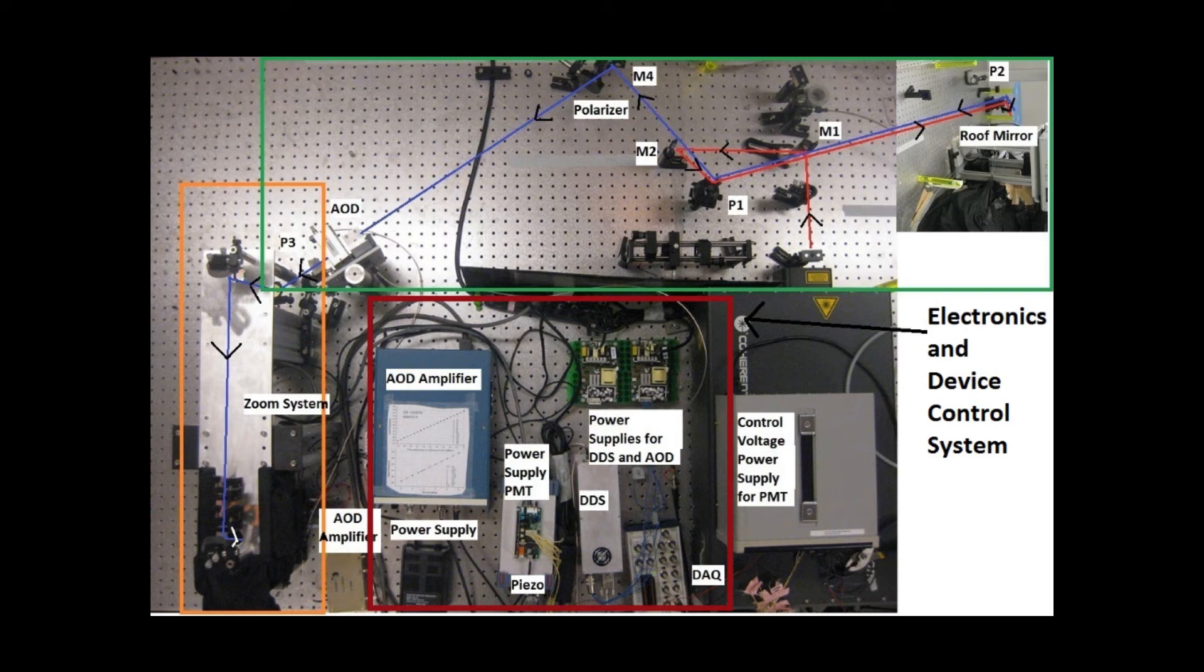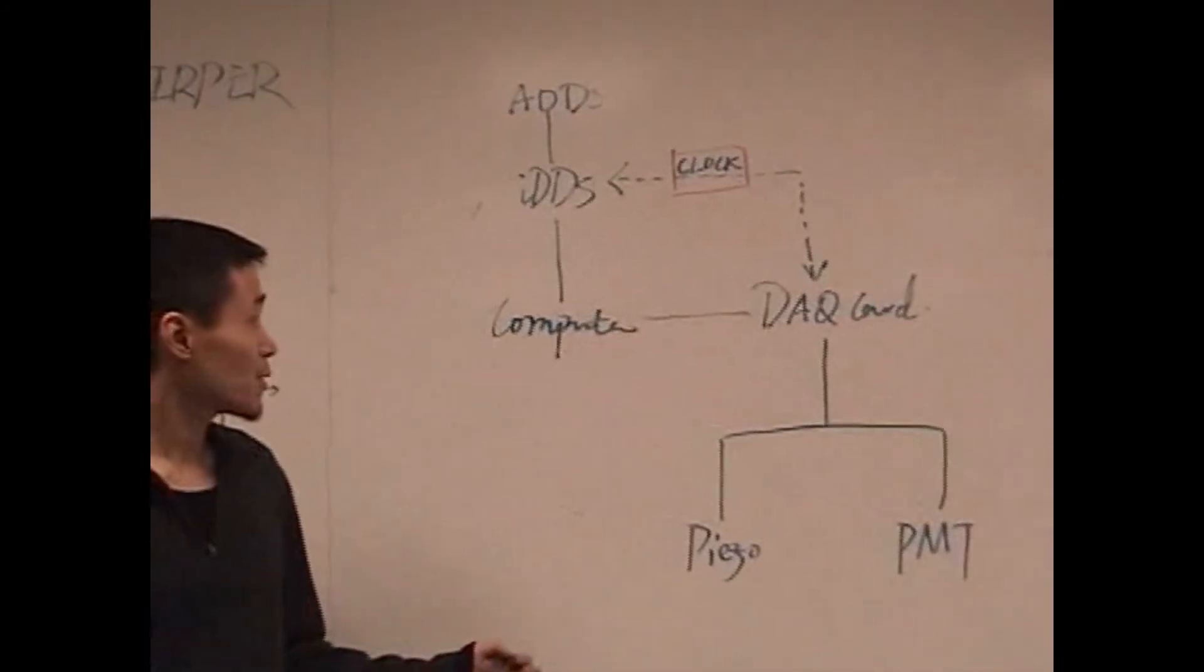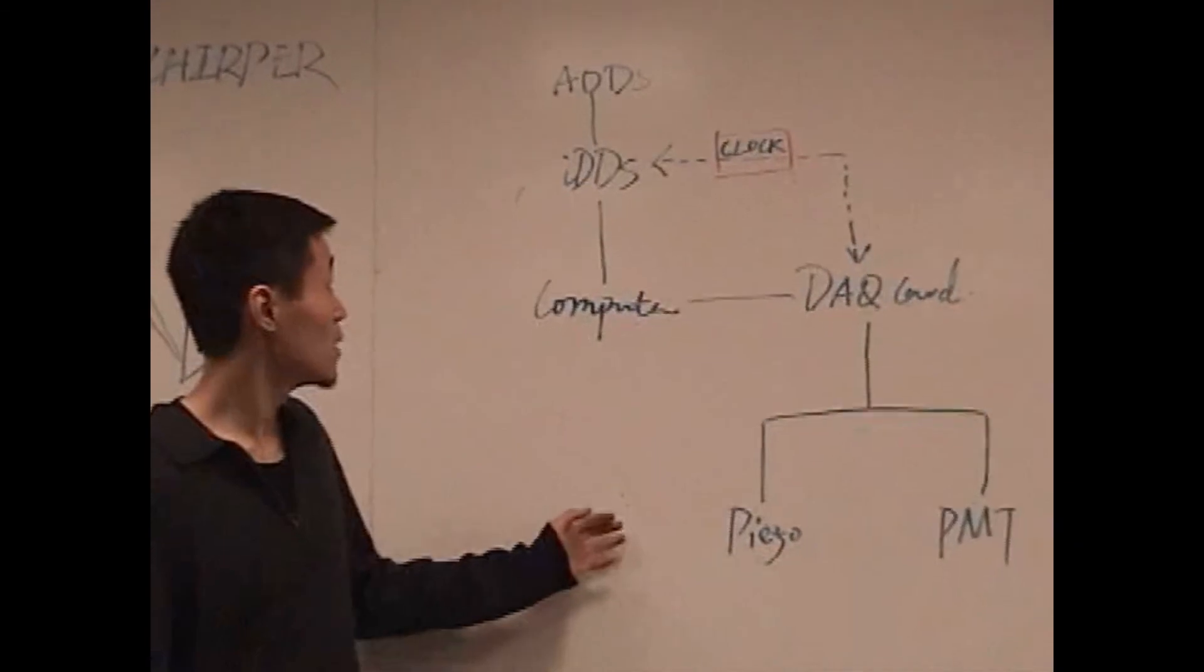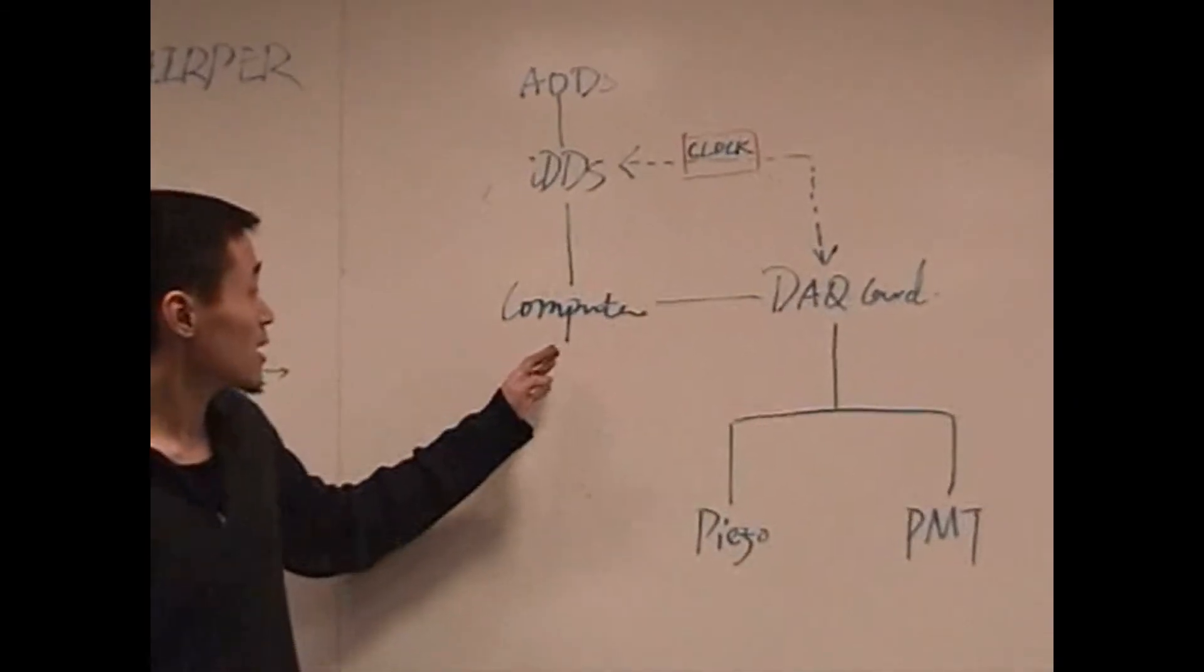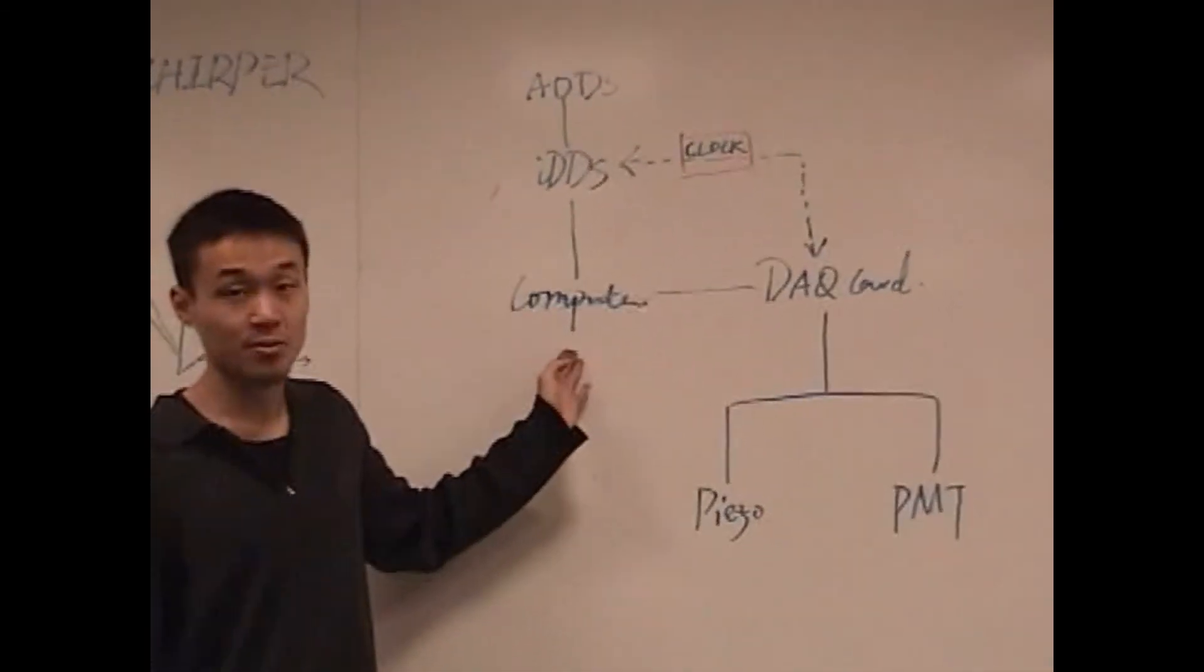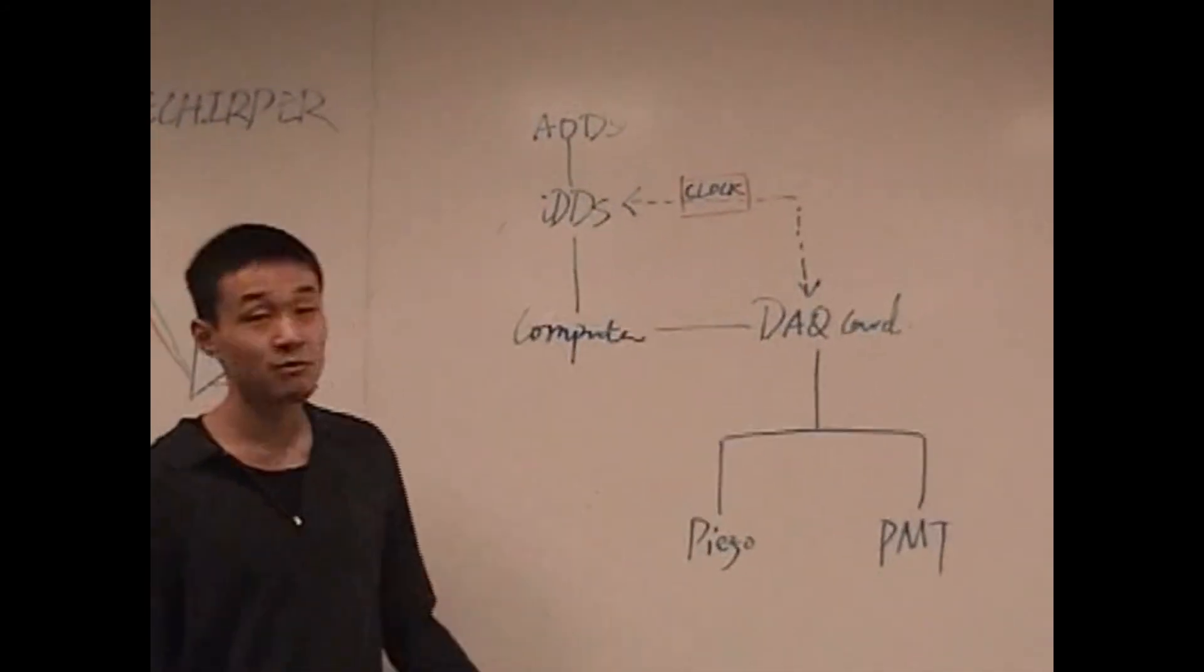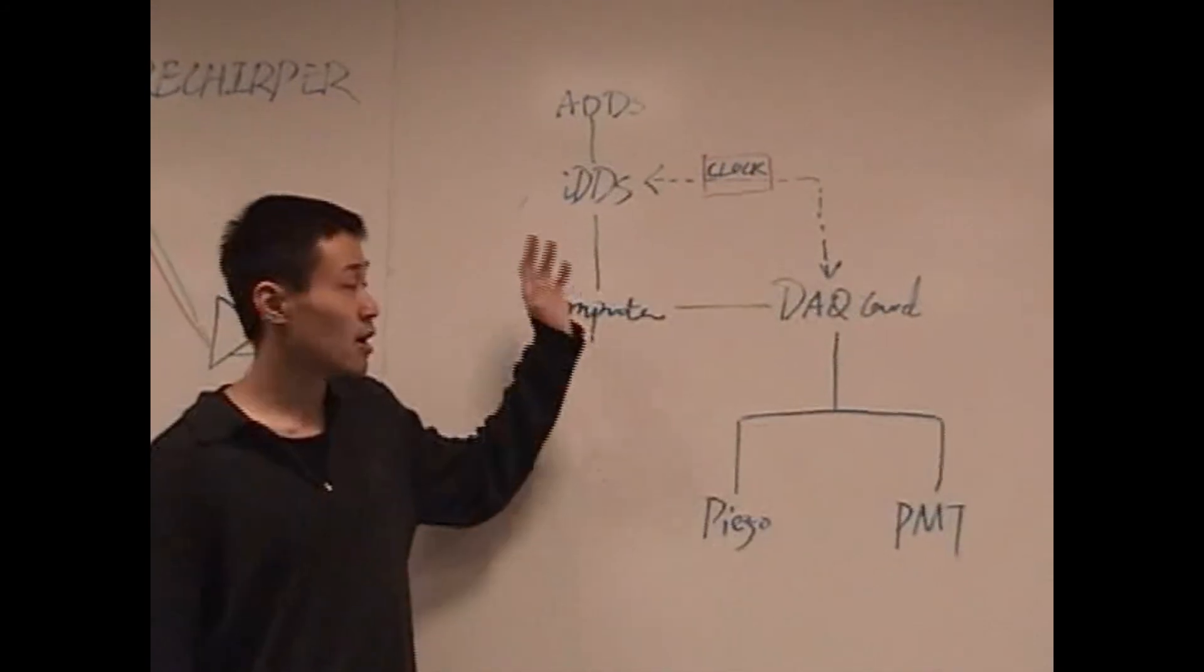The picture shows the different type of electronic and control devices we have used for our project. For device controlling our project, we are using a computer. Essentially, we are connecting other three major devices that we have to control. The acoustical optical devices, the piezo motor drive and the PMT. So we are using the USB port in the computer to directly connect the frequency synthesizer, IDDS, to the computer. And then we are connecting the computer to the DAQ card, which controls the piezo and PMTs. One thing we have to point out is that we are using a clock, internal clock of the DAQ card to control the IDDS so that all the devices can be synced.